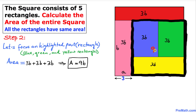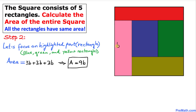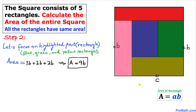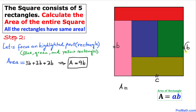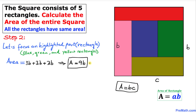Let's focus on this highlighted rectangle again. We know that one side is b units, so this side is also b units. I'm going to call the other side of this highlighted rectangle 'c'. Using the area formula A = a × b, the area of this rectangle is b × c.